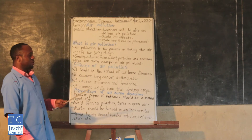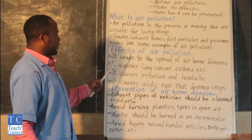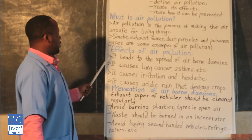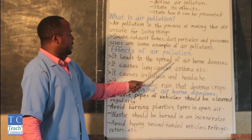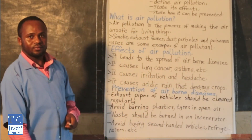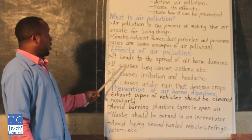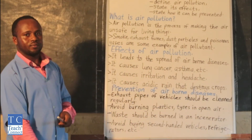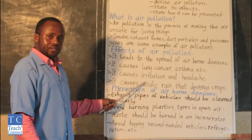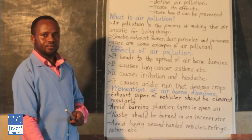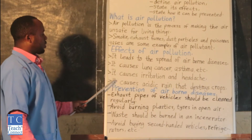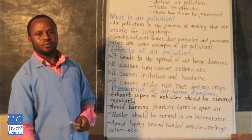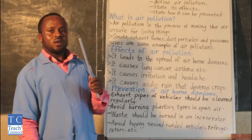Our next point: we are going to be looking at the effects of air pollution. What are some of the effects of air pollution? First, it leads to the spread of airborne diseases. Second, it causes lung cancer, asthma, etc. Third, it causes irritation and headache. And lastly, it causes acid rain that destroys crops.